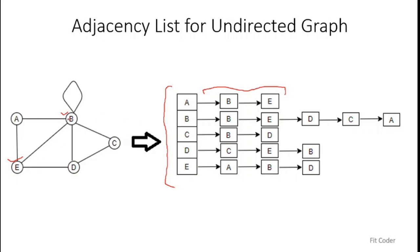For node A, the adjacent nodes are B and E, so element A points to a list containing B and E. Node B has adjacent neighbors A, E, D, C, and itself due to a self-loop. Node C is attached to B and D. Node D has neighbors E, B, and C, and node E has neighbors A, B, and D.